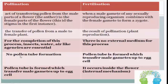Pollination has no pollen tube formation. While in fertilization, a pollen tube is formed which transfers the male gamete up to the egg cell. Fertilization occurs inside the flower — it is an internal mechanism.